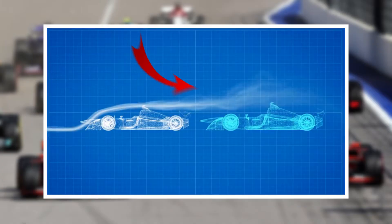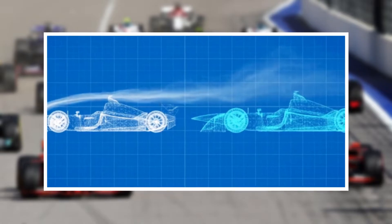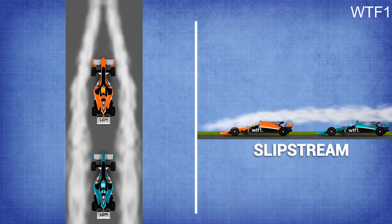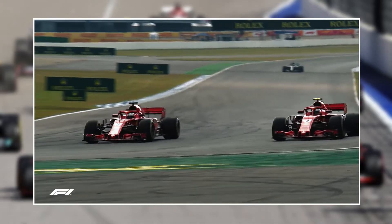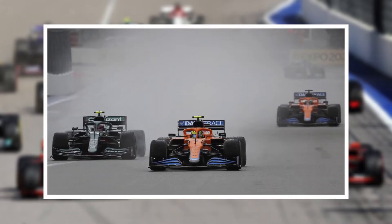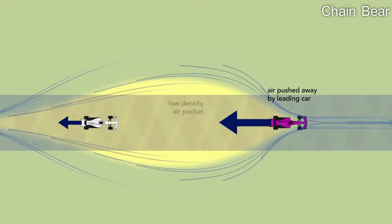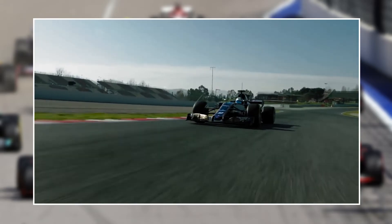This is due to the slipstream effect. In a racing situation, the car in front cuts a hole in the air while traveling at high speeds, creating a small vacuum-like effect just behind the car. If the following car is close — say within one second of the car in front — the overtaking driver can position his car in this vacuum created by the leading car and gain a speed advantage of up to 20 to 30 km per hour, depending on the track.